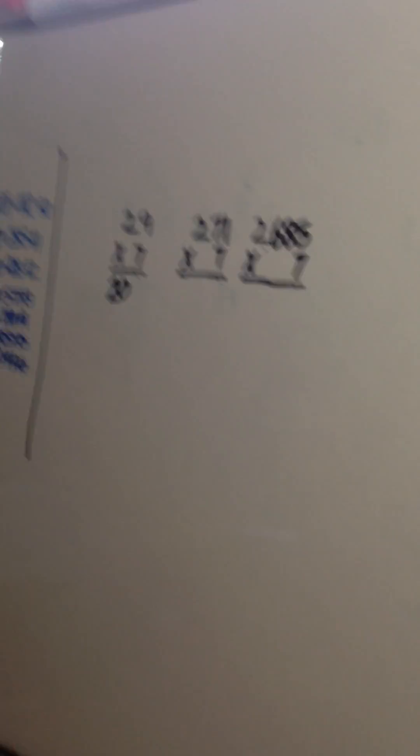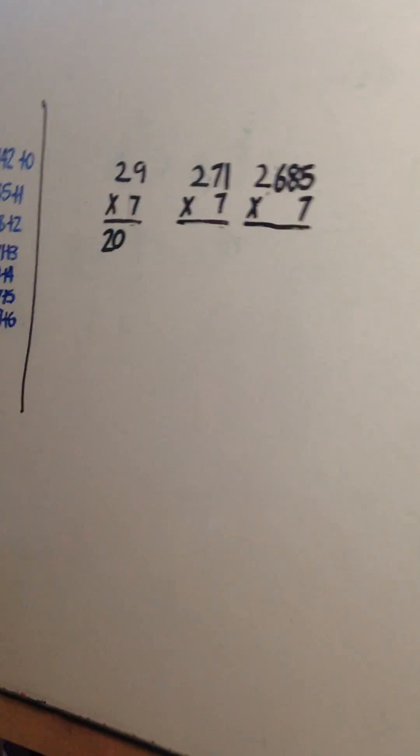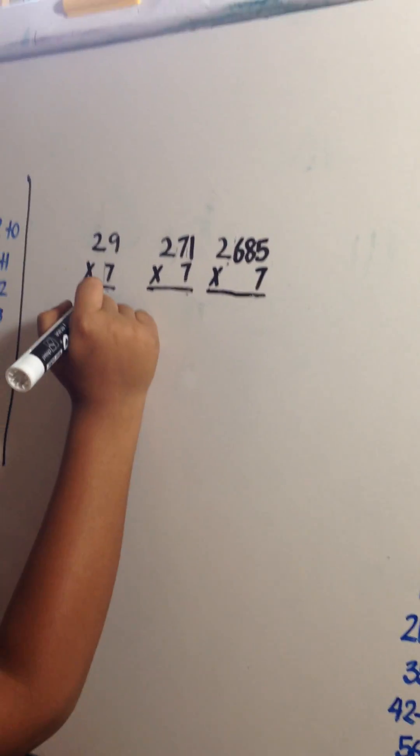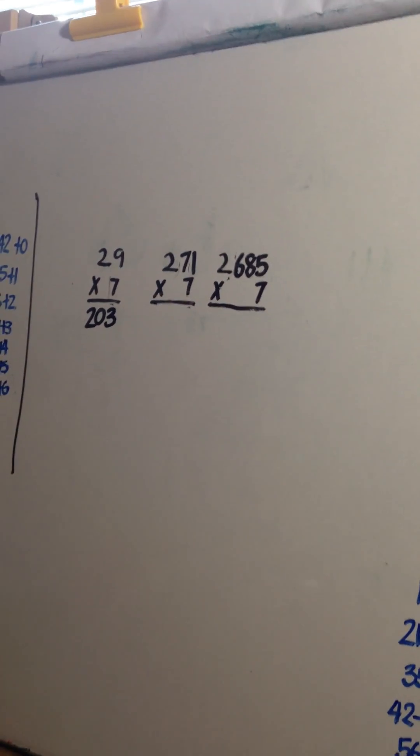9 times 7 is 63. Take the 6 off and you have 3. So the answer is 203.